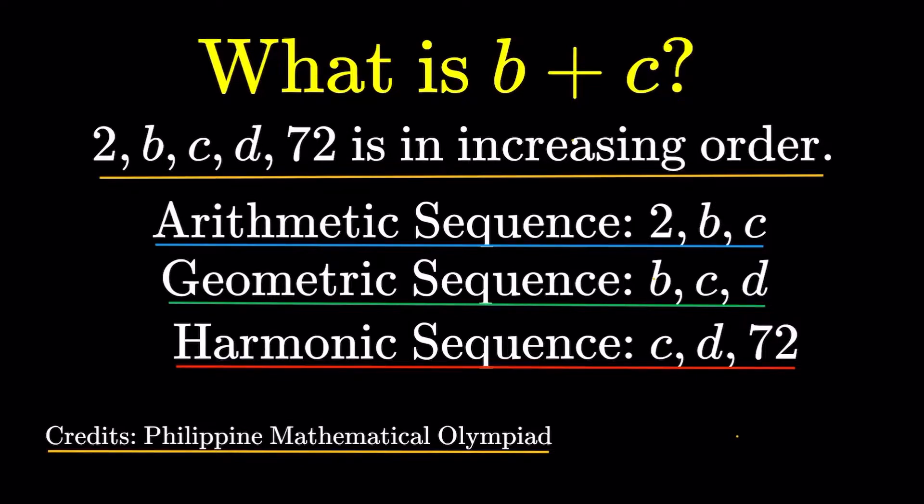What is the value of B plus C? So we are given that 2, B, C, D, 72 is in increasing order, and we have three relationships. 2, B, C is in arithmetic progression, B, C, D is in geometric progression, and C, D, 72 is in harmonic progression.